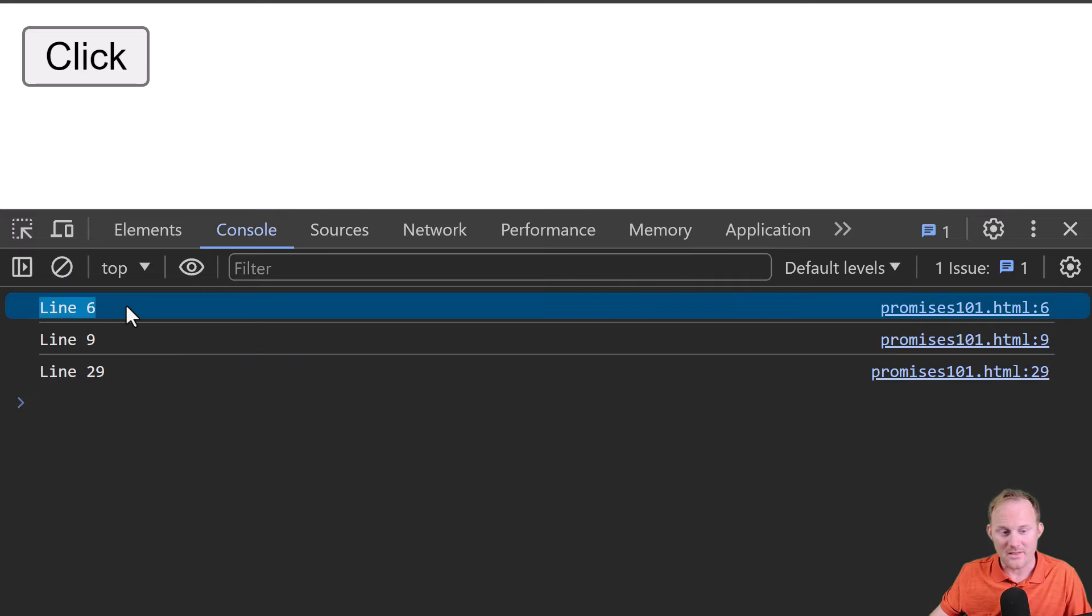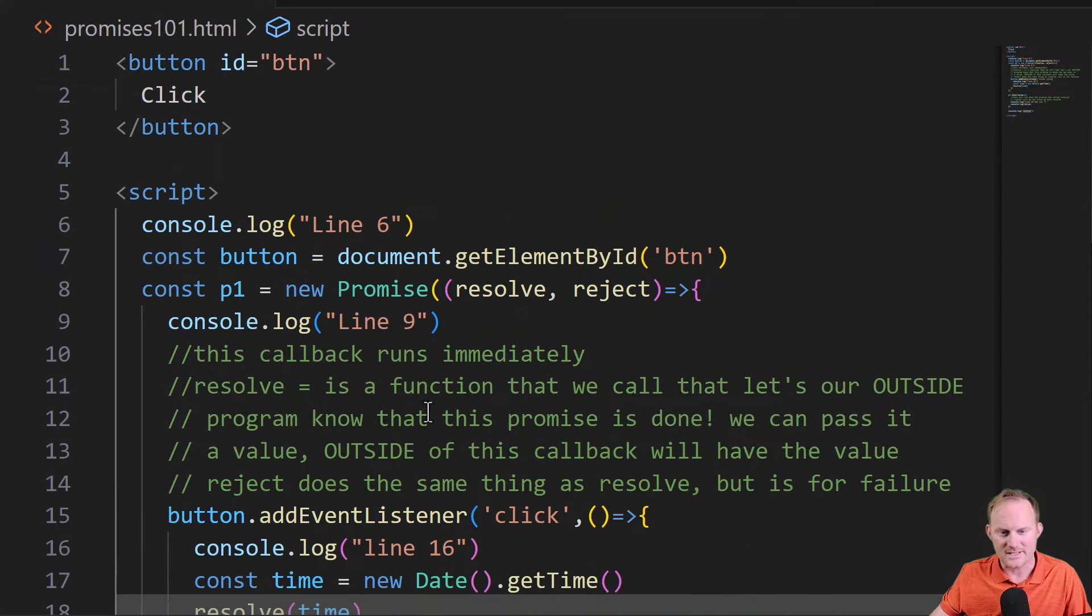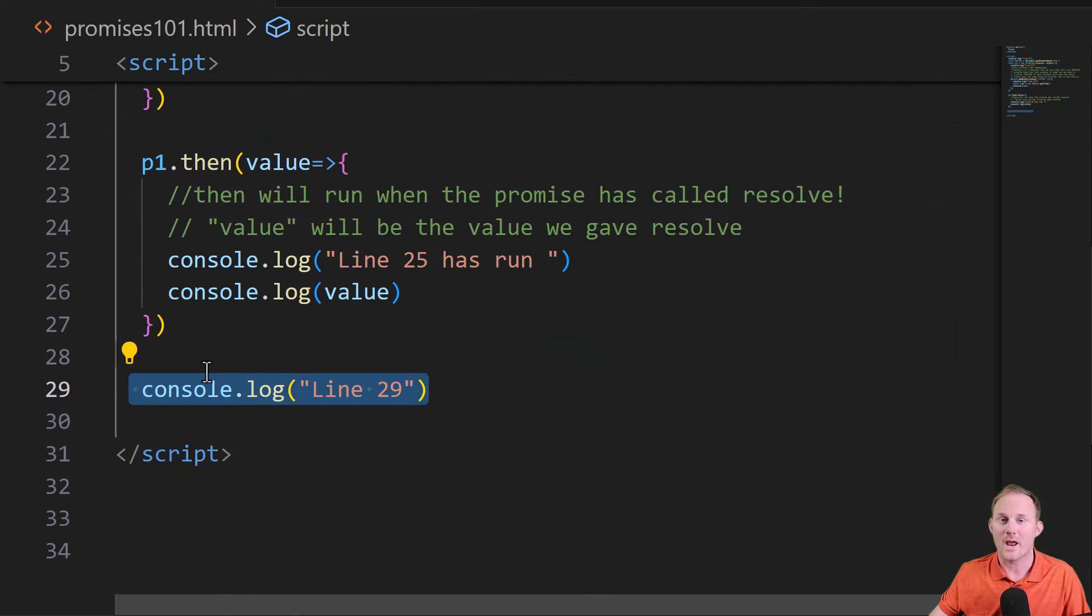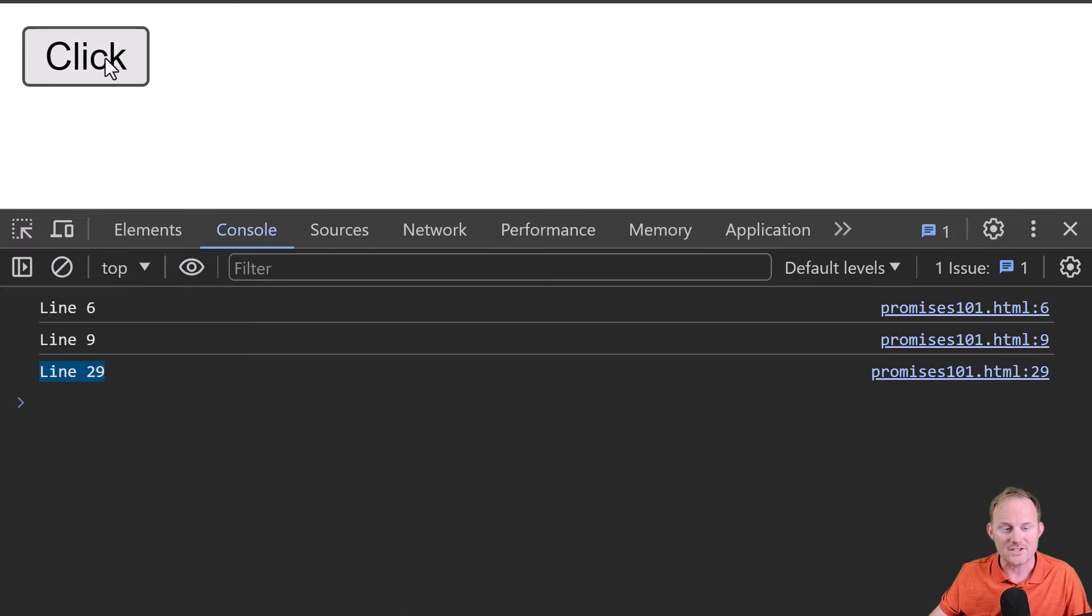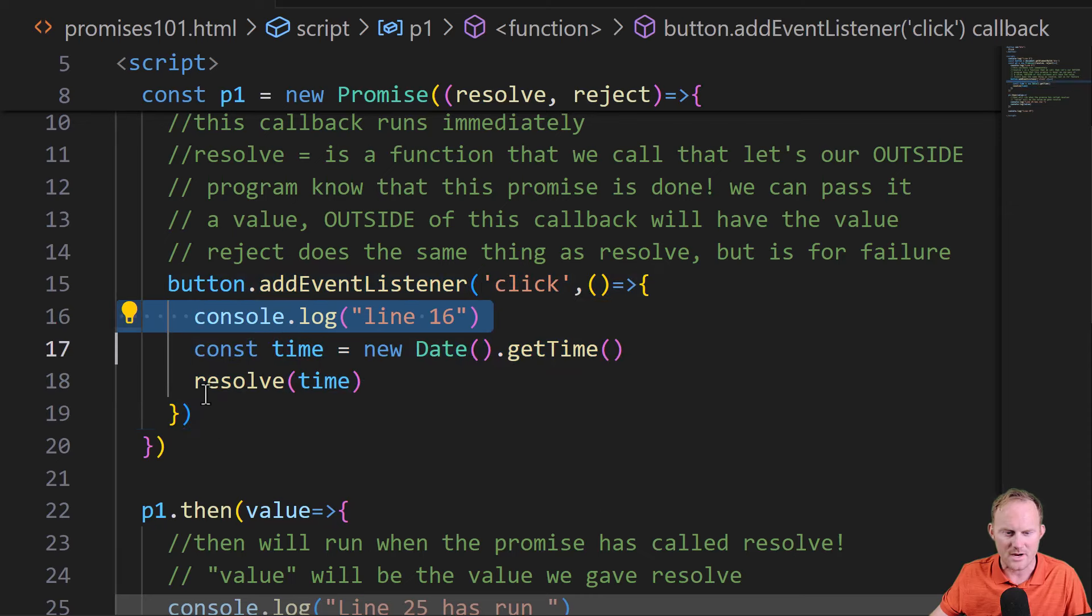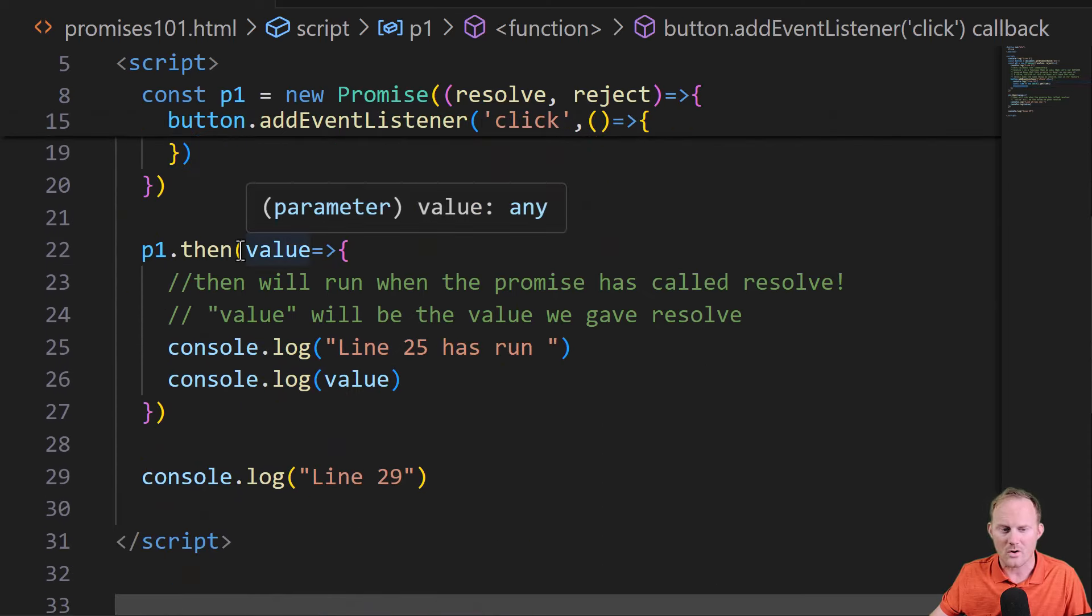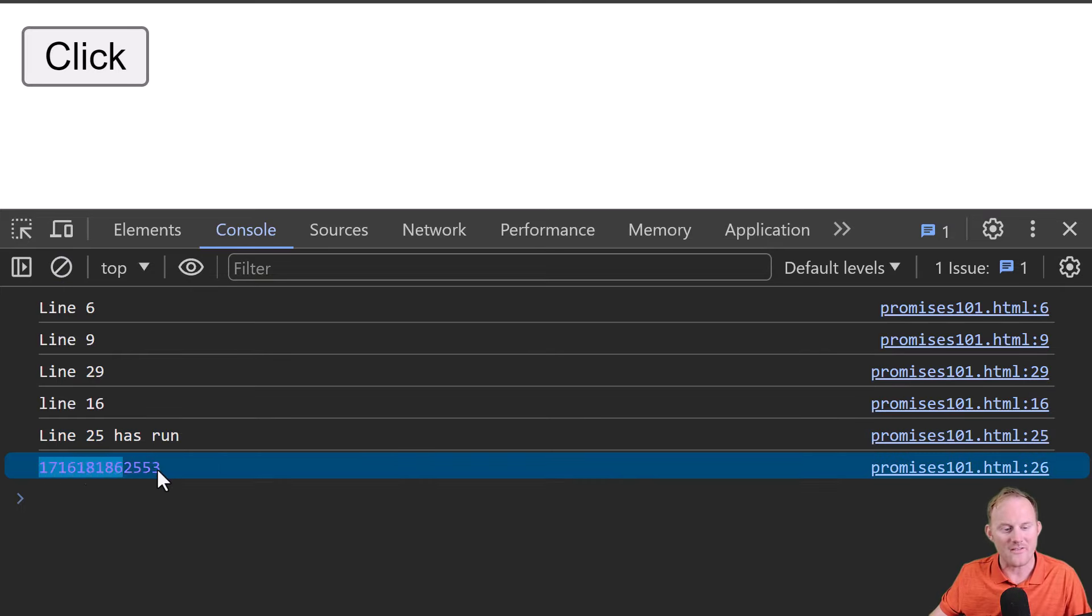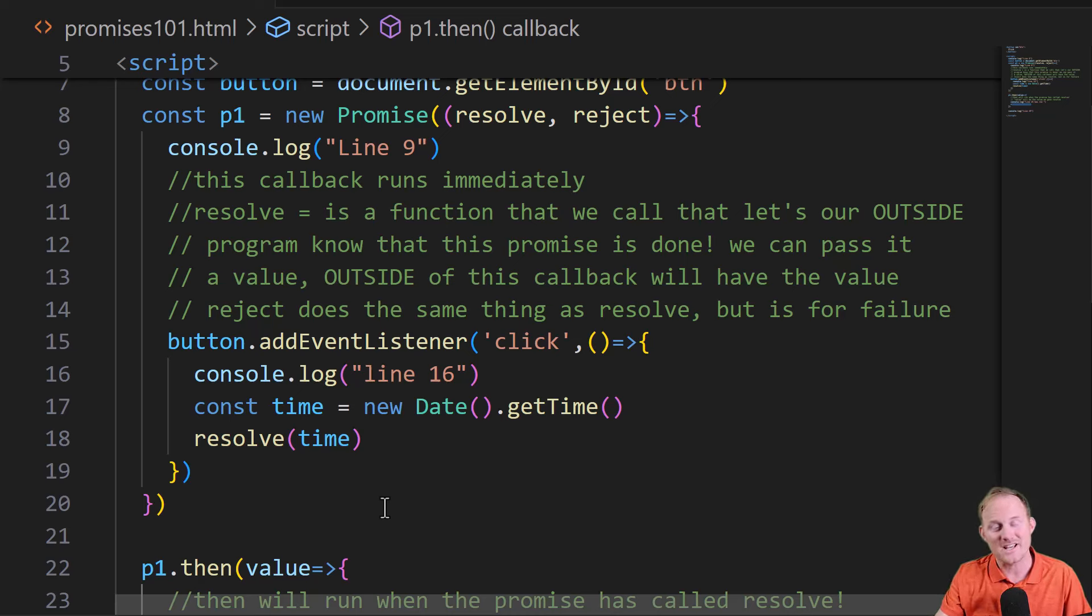Over to our browser. There's line six, line nine, and line 29. Line six, that one runs immediately. Line nine, that one runs immediately again because it's inside of our callback. Line 29 ran immediately. As soon as I click, we get line 16. That's back over here inside of our click listener right there. That called resolve. When resolve got called, the then kicked into action. We got 25, we got 25, and we got our timestamp. That is the basics of promises. We will go farther, and I will link that video as soon as it is done, but I will see you next time. Thanks so much for watching. Work on your promises.